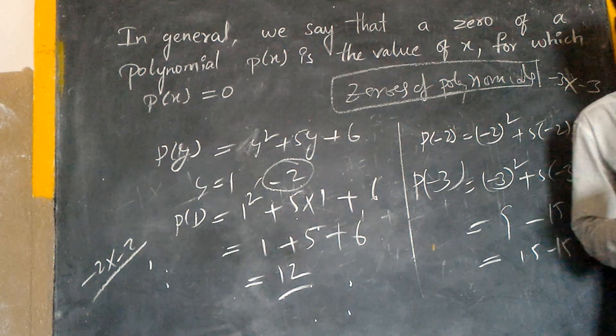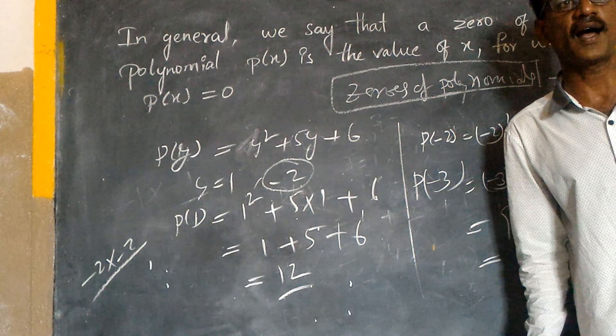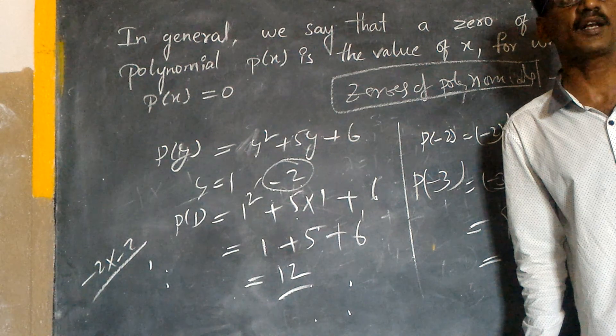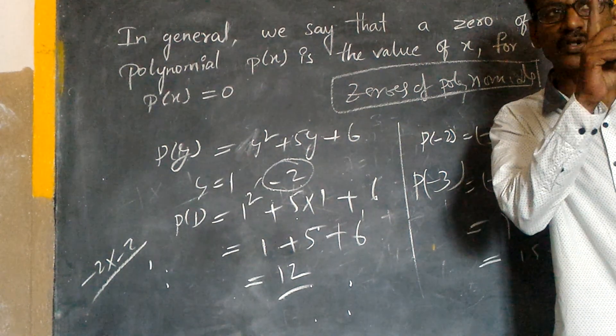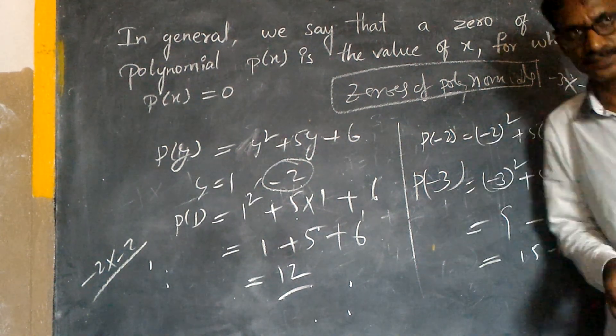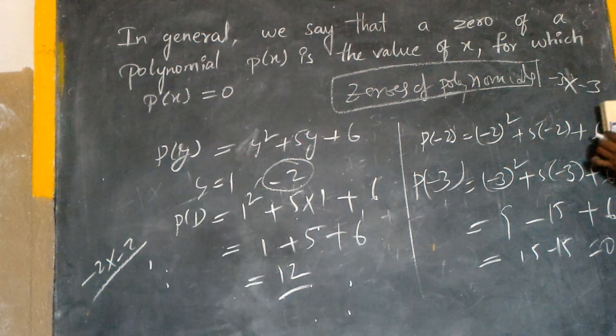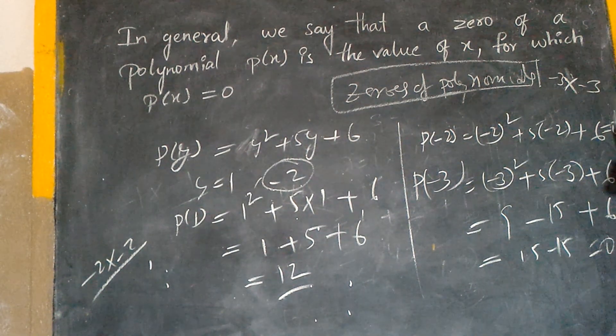Degree two: up to two zeros. Degree three: three zeros. Degree one: one zero.